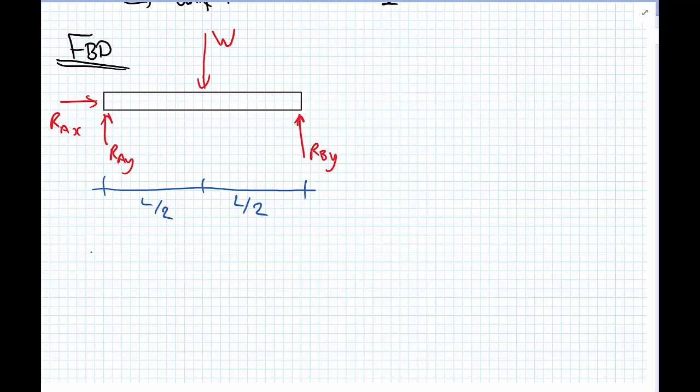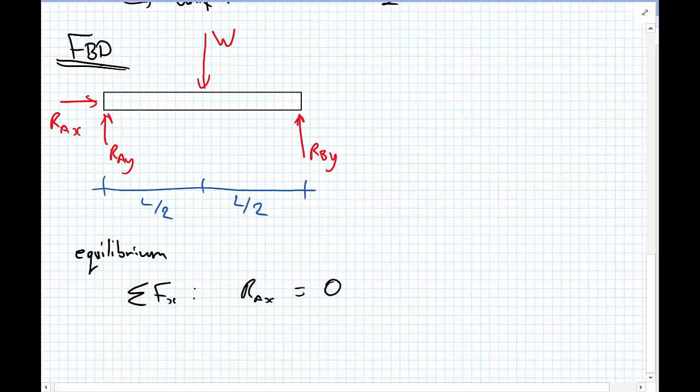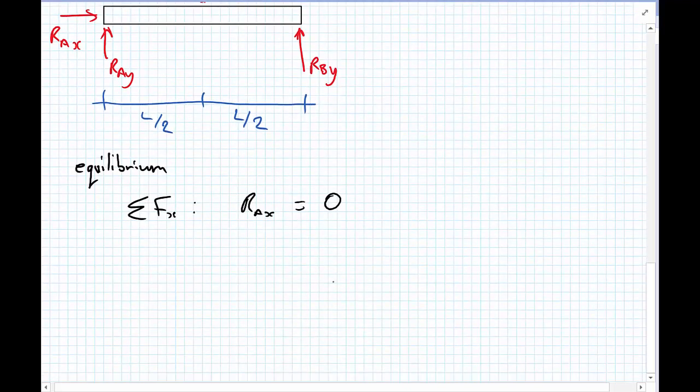So, let's do equilibrium calculations. So, we have sum of the forces in the X direction. We get RAX equals 0.